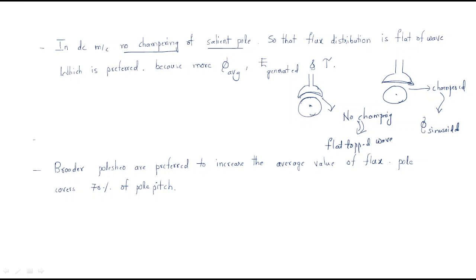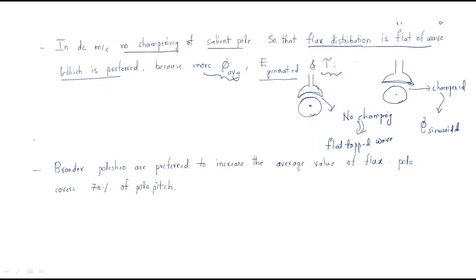Salient poles means the poles have saliency — protruding pole shape. No chamfering on salient poles gives us the flat tapered wave, which is the preferred flux distribution. By using this flat tapered wave, we get more average flux, which means more generated EMF, and whenever more EMF is generated, more torque is produced. That is why we do not provide chamfering.